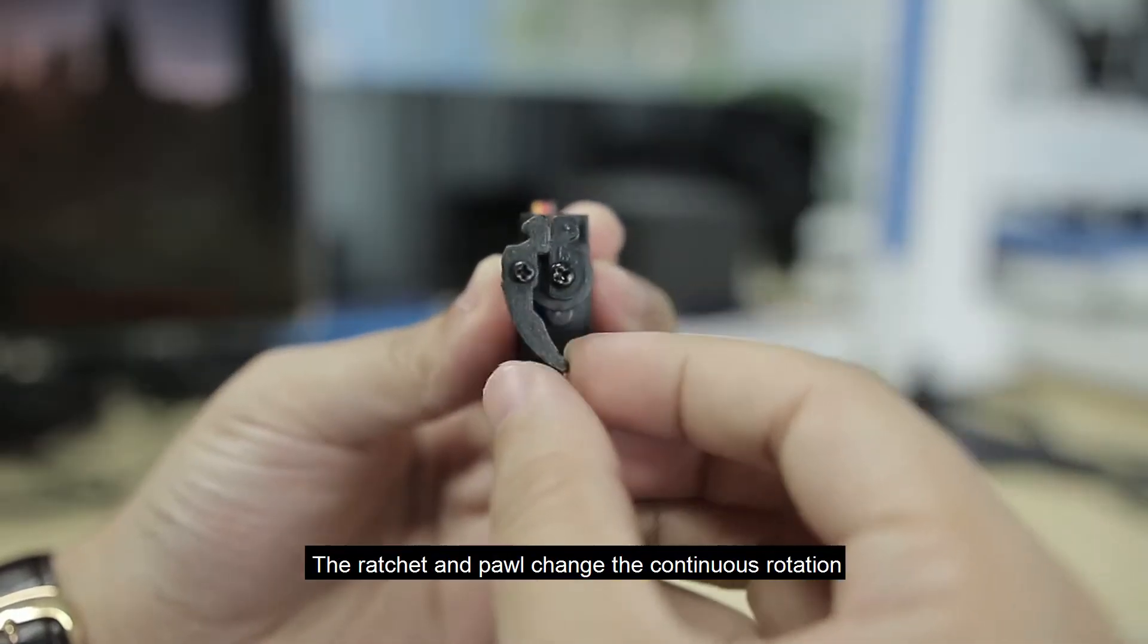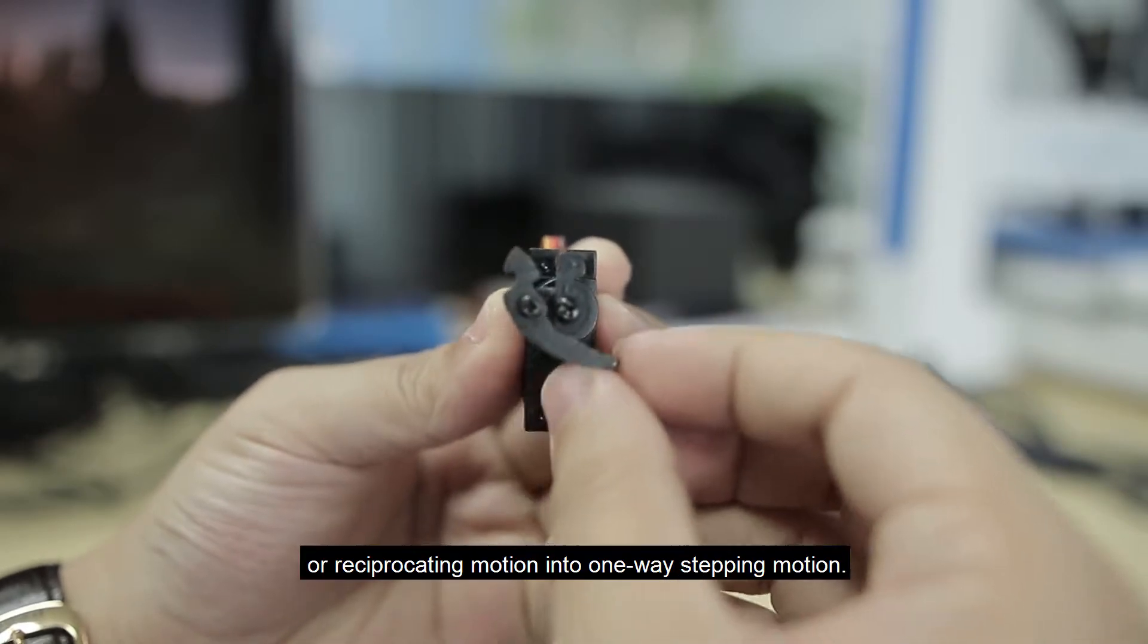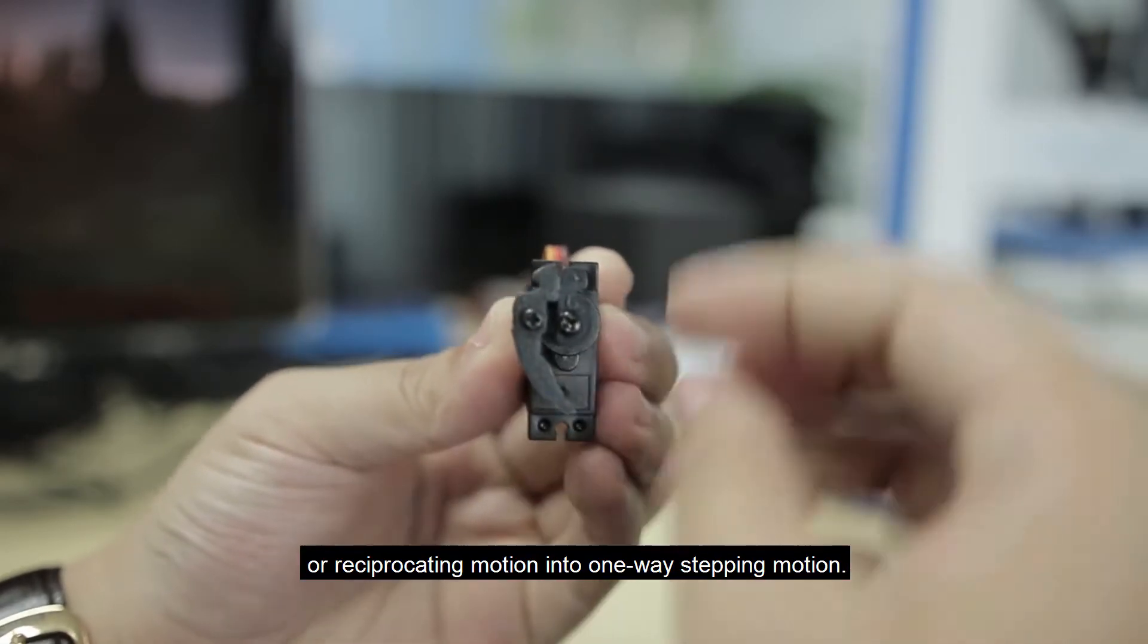The ratchet and pawl change the continuous rotation, a reciprocating motion into one-way stepping motion.